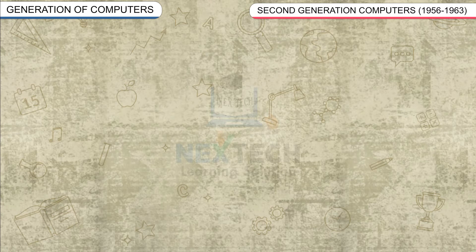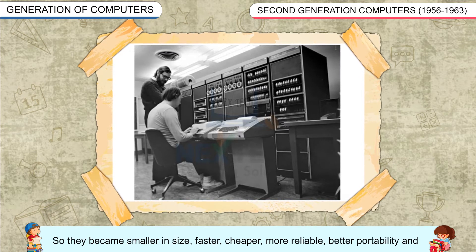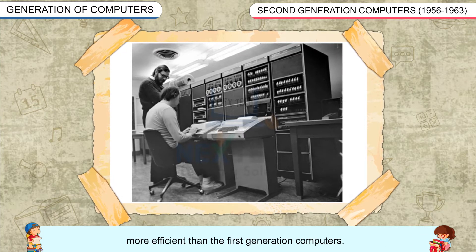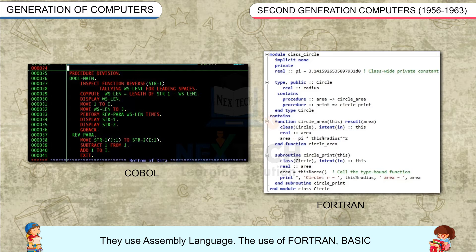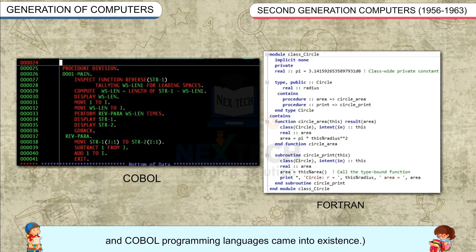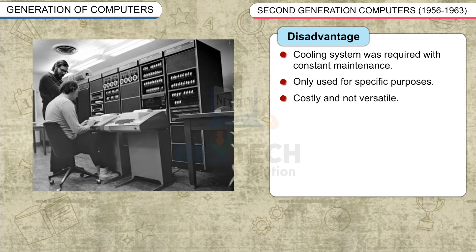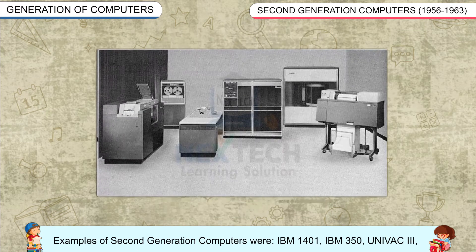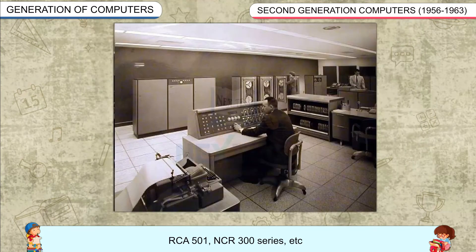Second Generation Computers, 1956–1963: The second generation computers used transistor technology, making them smaller in size, faster, cheaper, more reliable, better portability, and more efficient than first generation computers. They used punch cards and paper tapes as input devices and used assembly language. The use of FORTRAN, BASIC, and COBOL programming languages came into existence. Disadvantages: cooling system was required with constant maintenance, only used for specific purposes, costly and non-versatile. Examples include IBM 1401, IBM 350, Univac 3, RCA 501, NCR 300 series, etc.